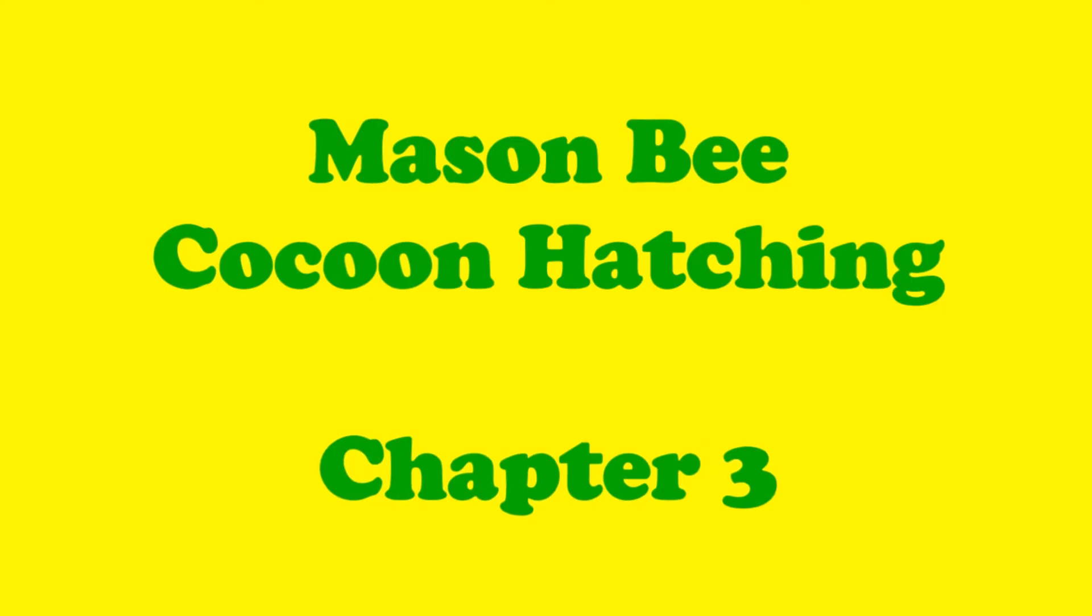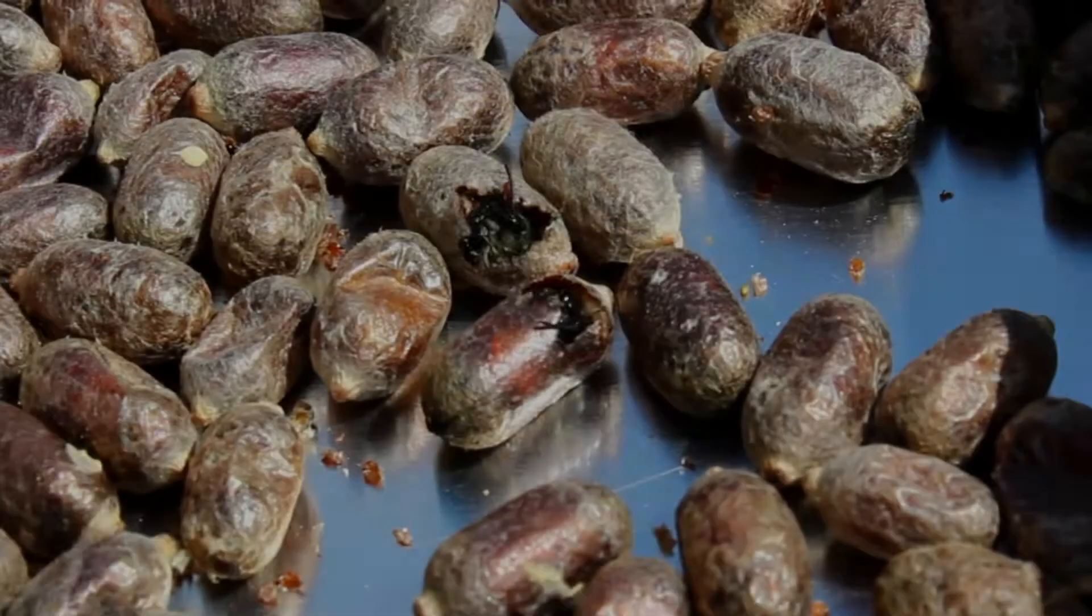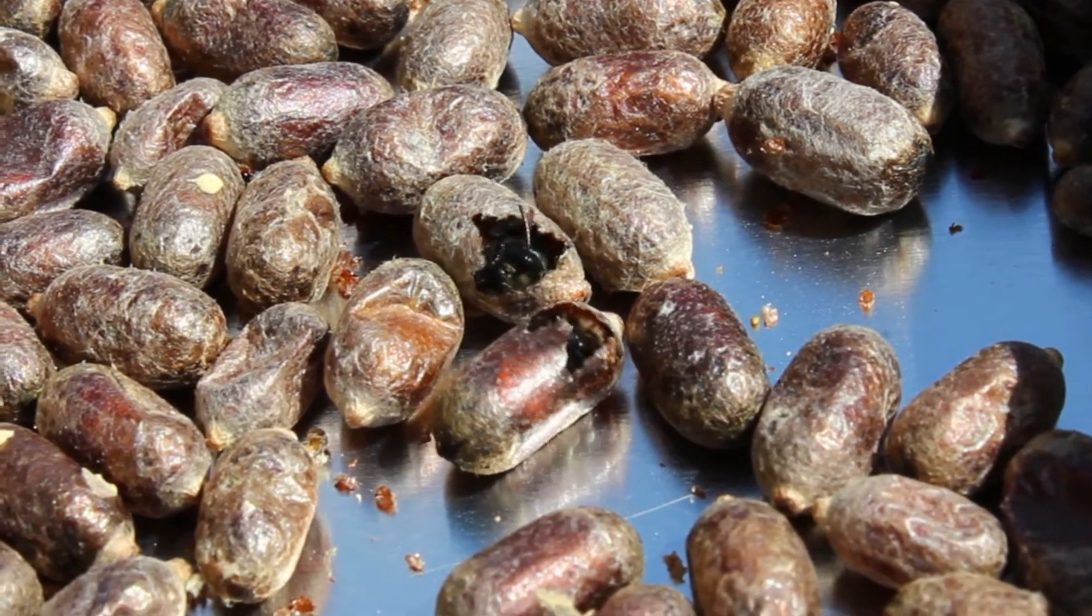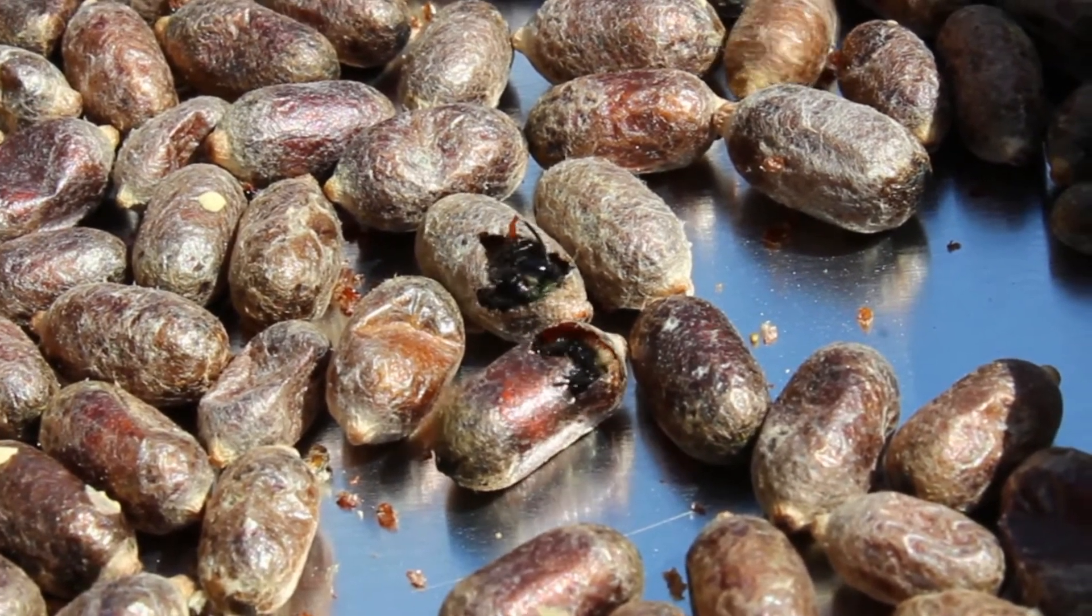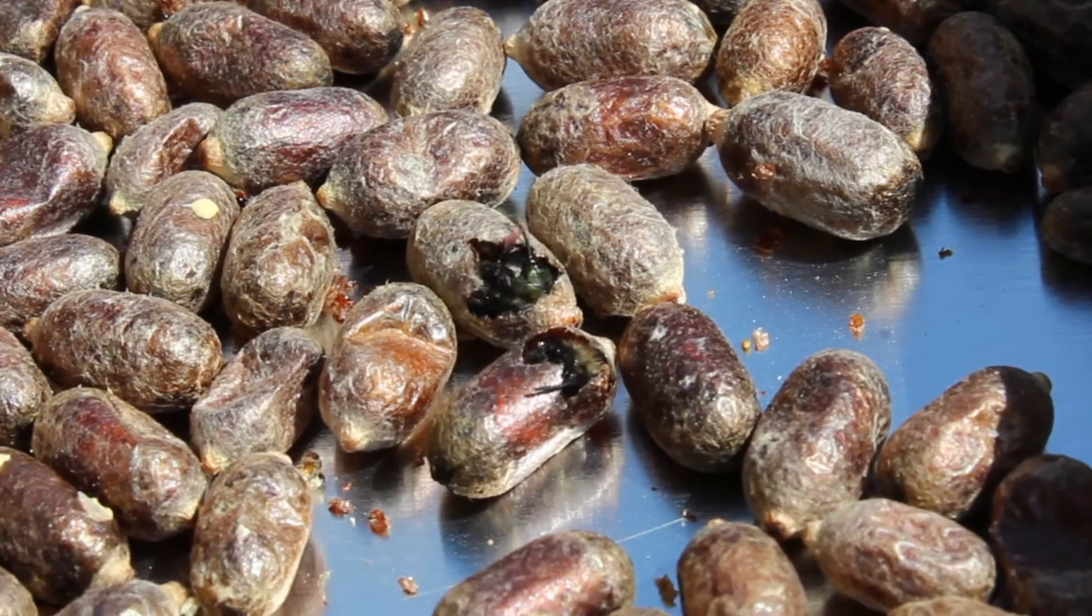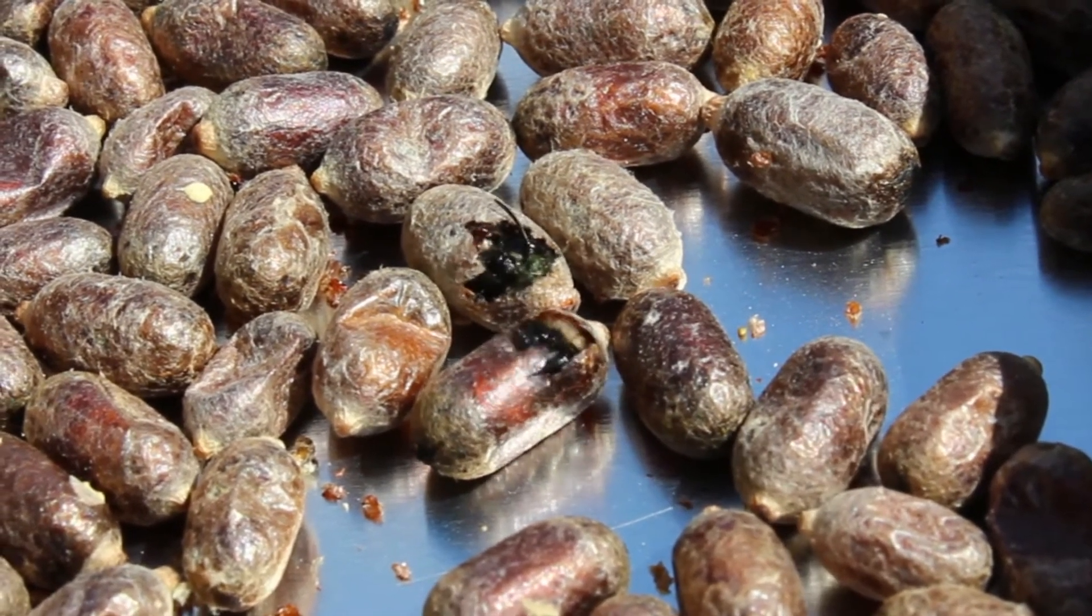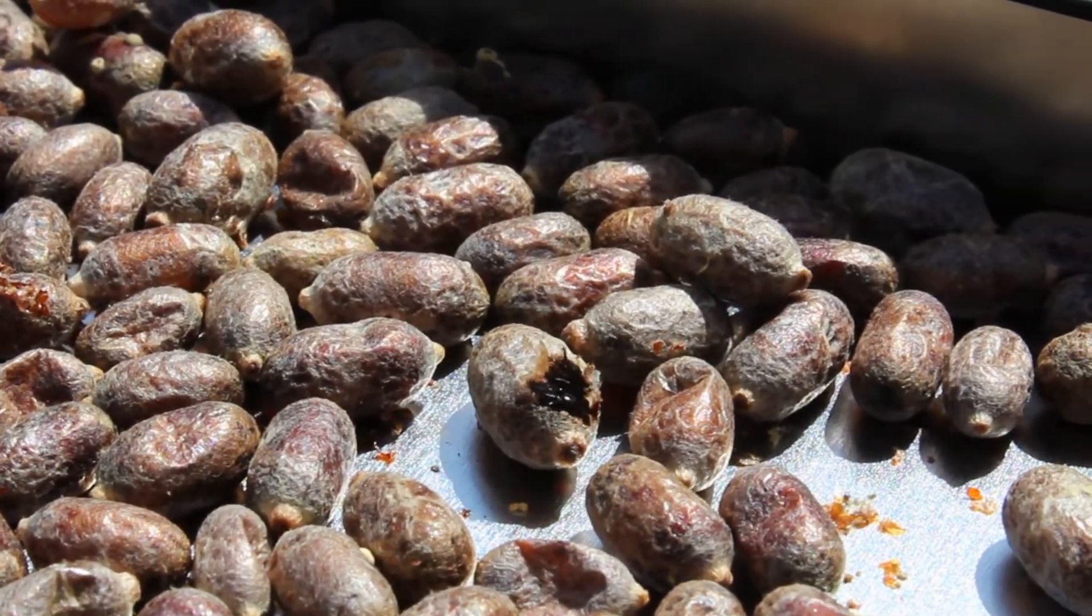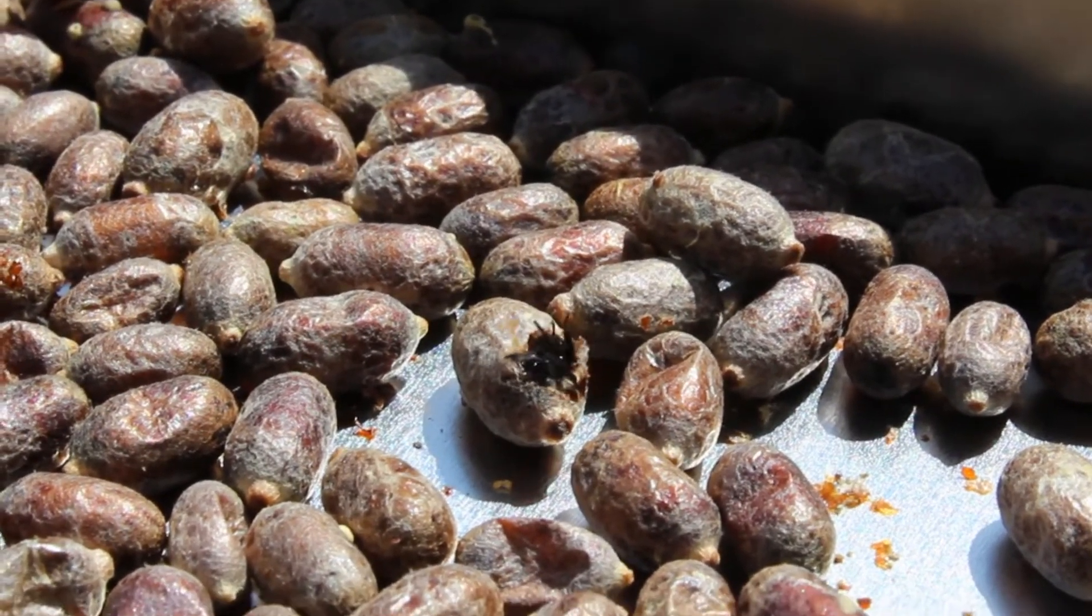Mason bee cocoon hatching. Mason bees will begin to hatch when the daily temperature is consistently above 55 degrees Fahrenheit or 13 degrees Celsius. In nature, using their strong mandibles, the bees will first chew their way out of their cocoons and then break through the mud walls that divide up their tube.